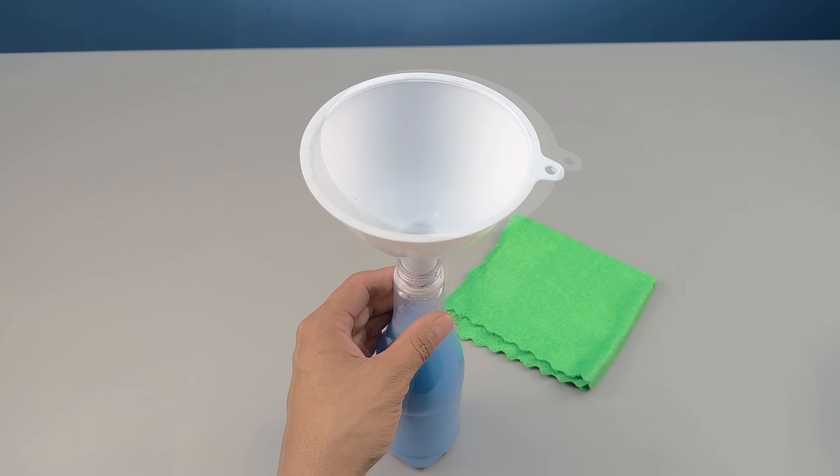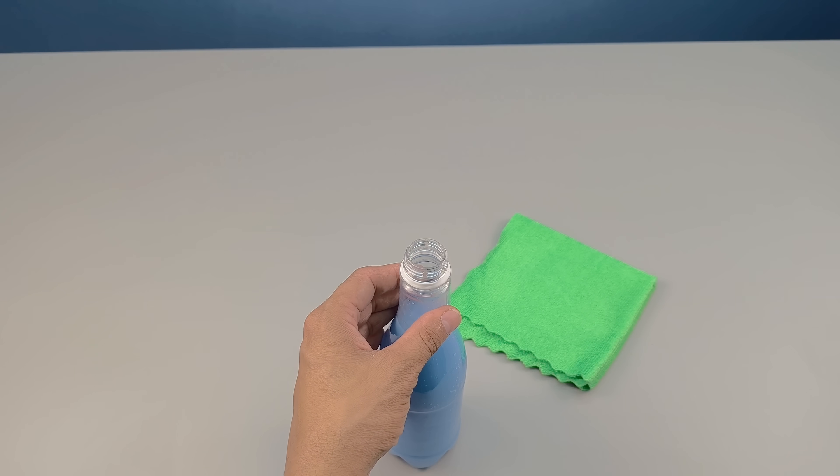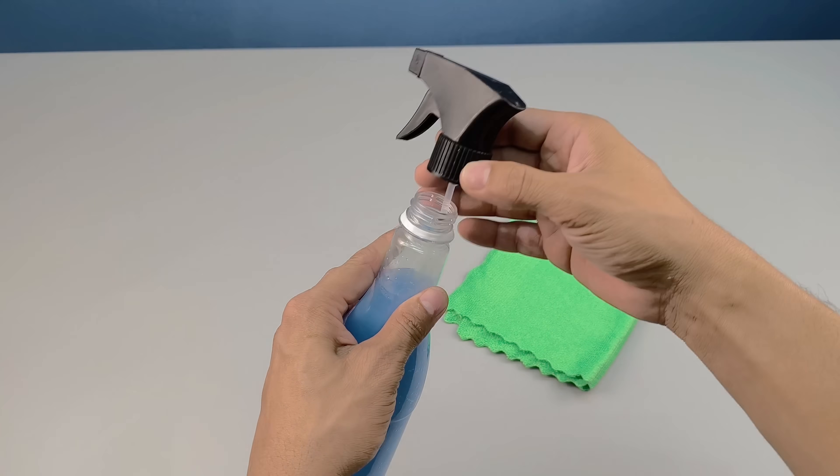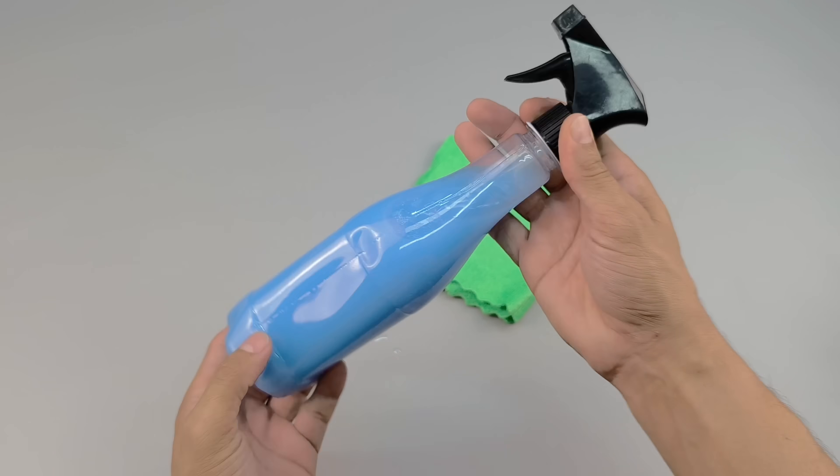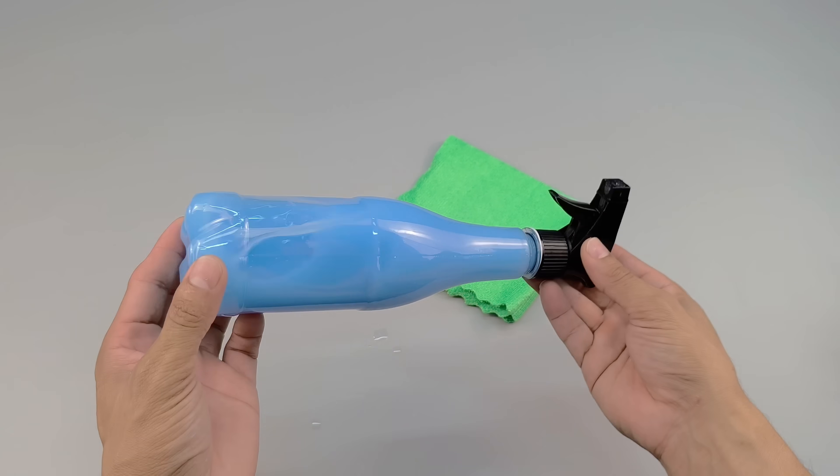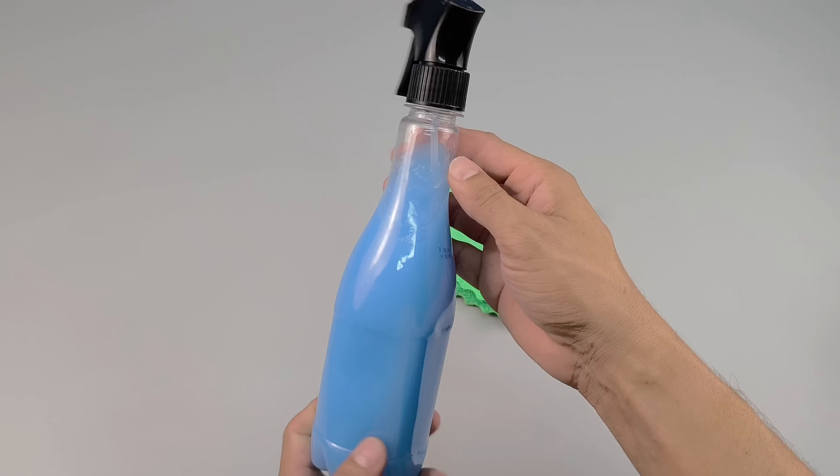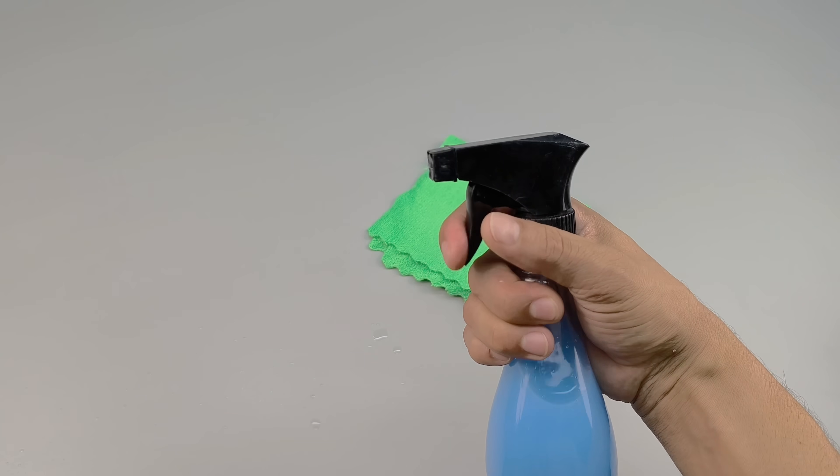If there is any leftover liquid, you can store it in larger containers with tight-fitting lids, or even reuse empty cleaning product bottles that are thoroughly washed, dry, and free of any chemical residue. This ensures practicality and intelligent material recycling.